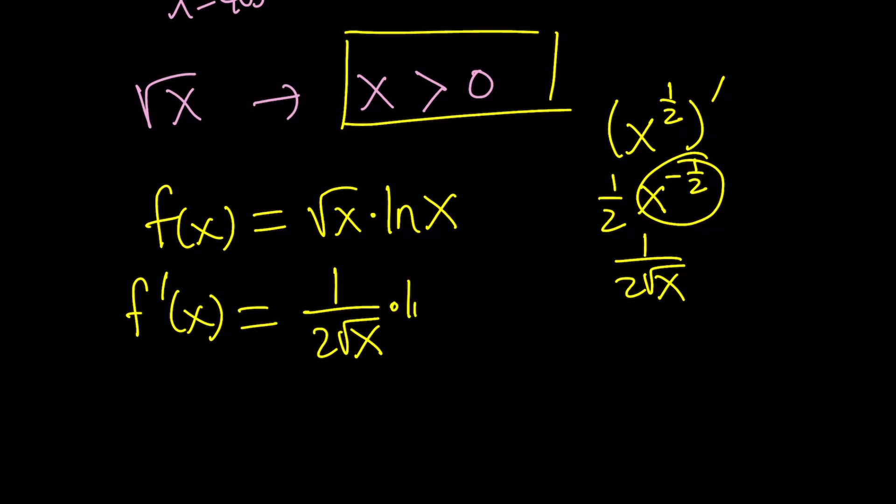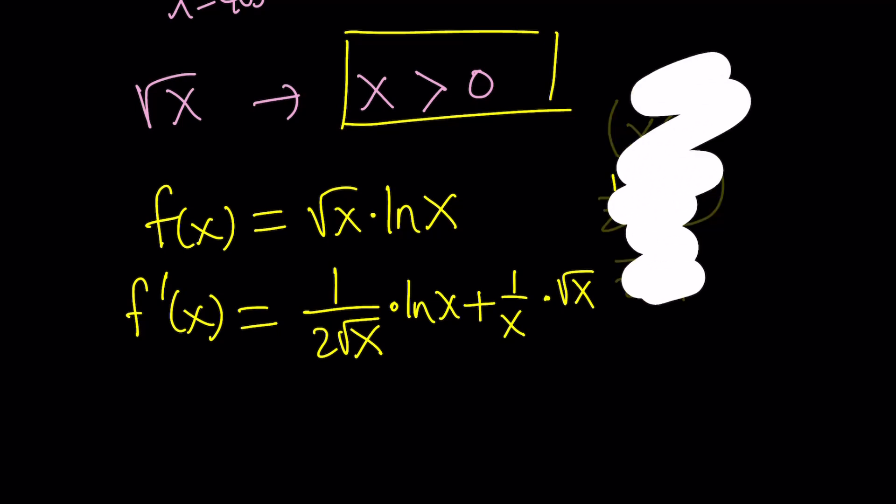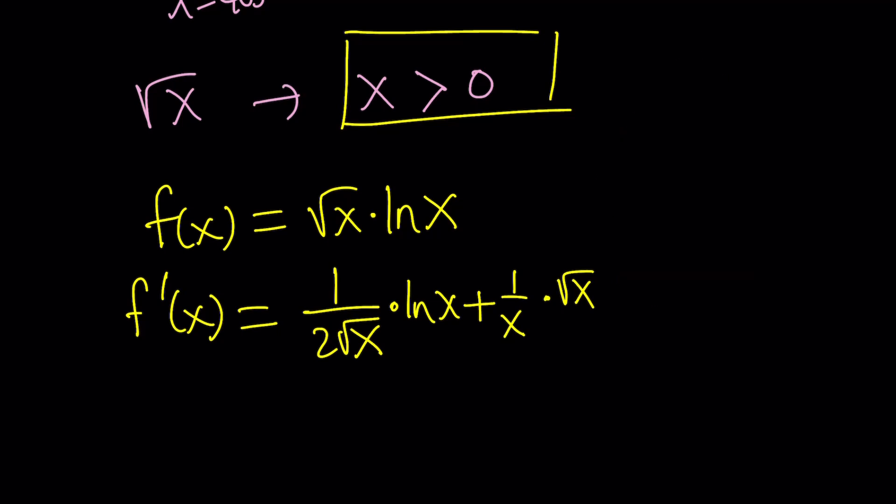Remember the power rule with x to the power n. You bring the 1 half to the front and then reduce the power by 1, which makes it negative 1 half. And this becomes 1 over 2 times the square root of x. Times the second function plus the derivative of ln x, which is 1 over x, times the first function, which is square root of x. Let's go ahead and erase this. We don't want to get confused.